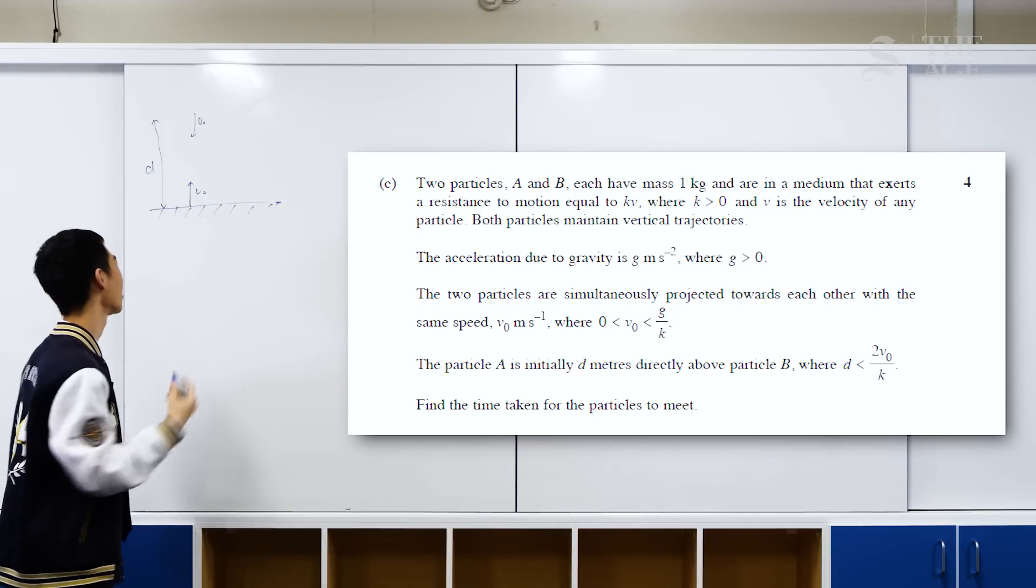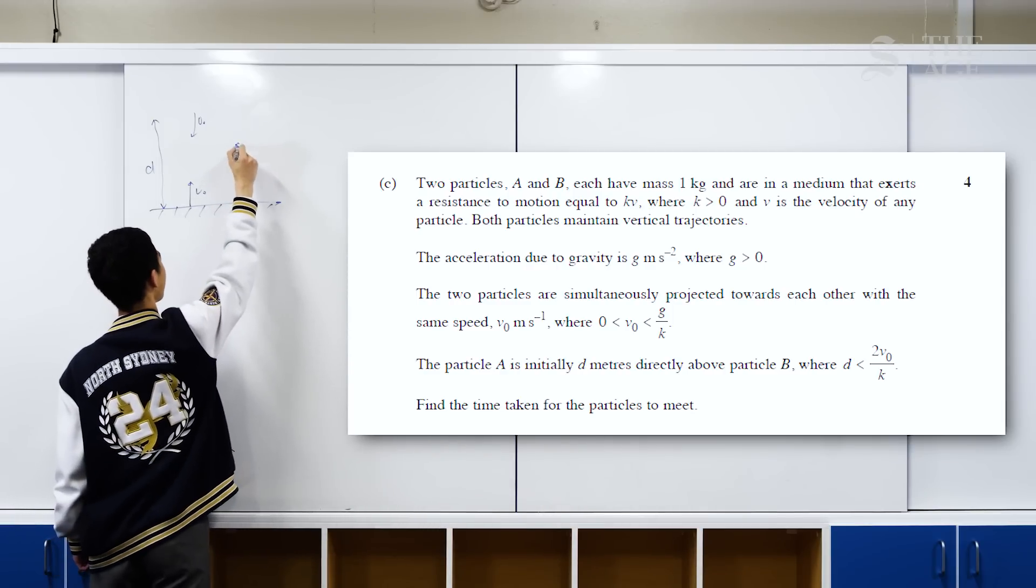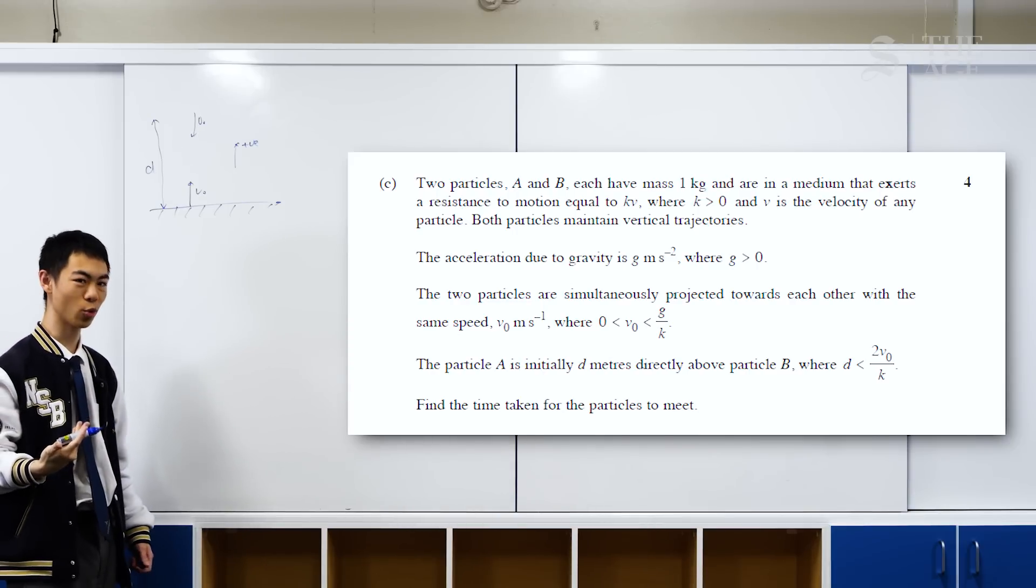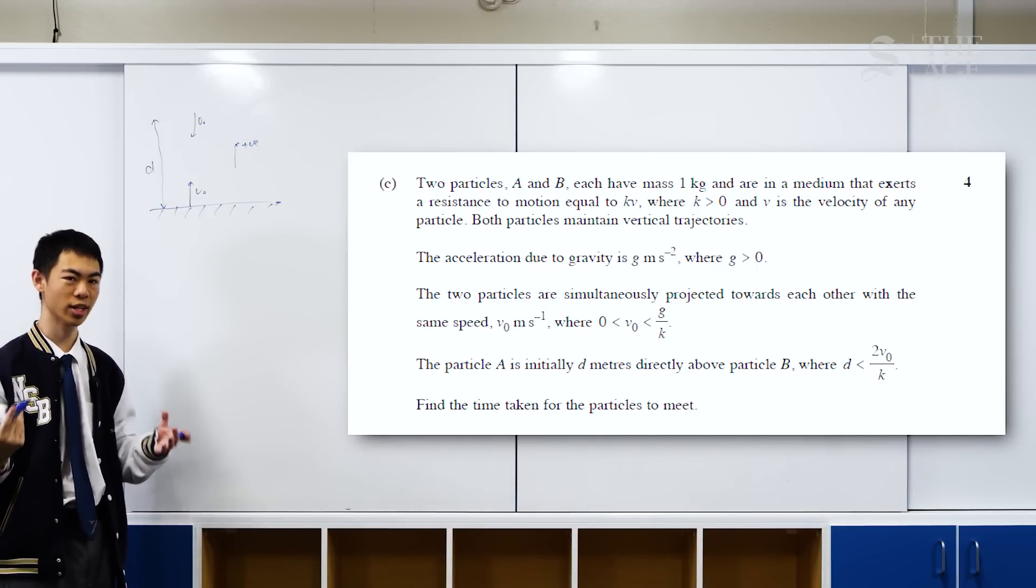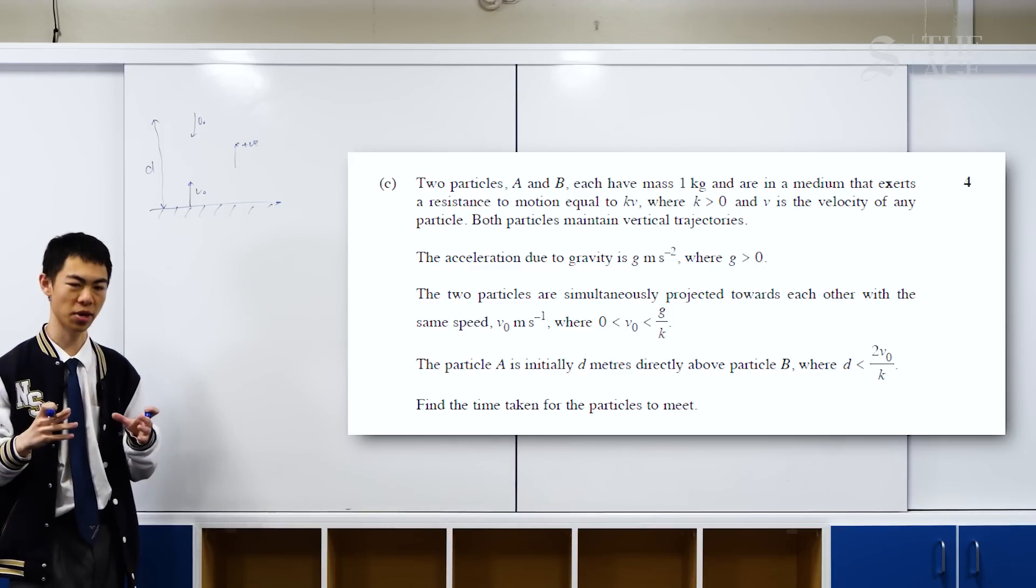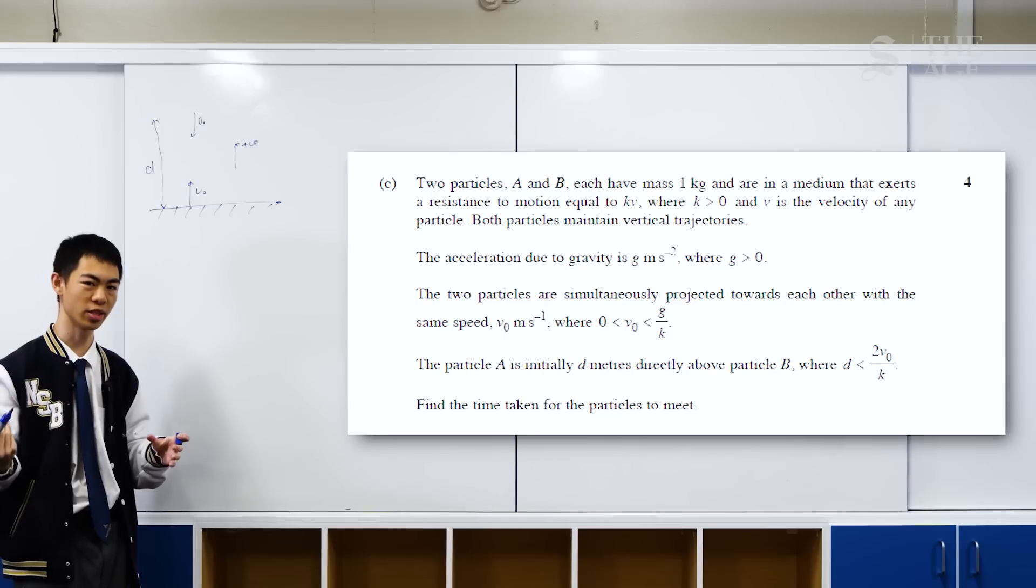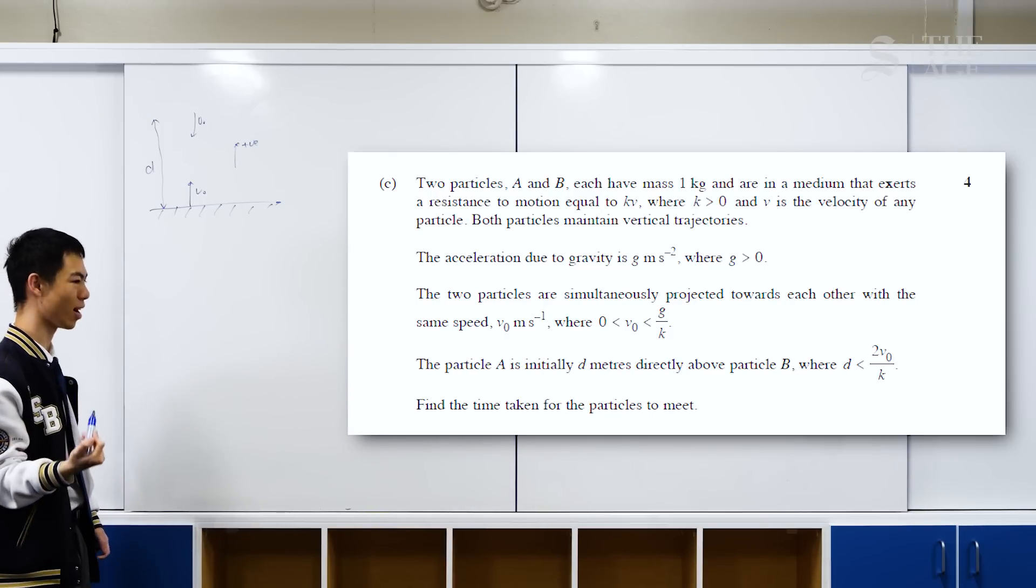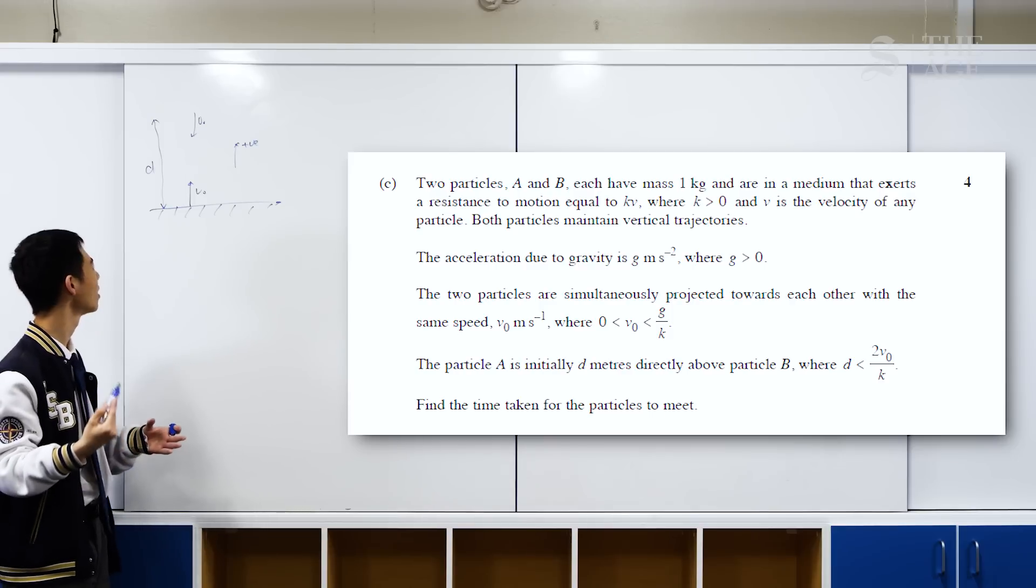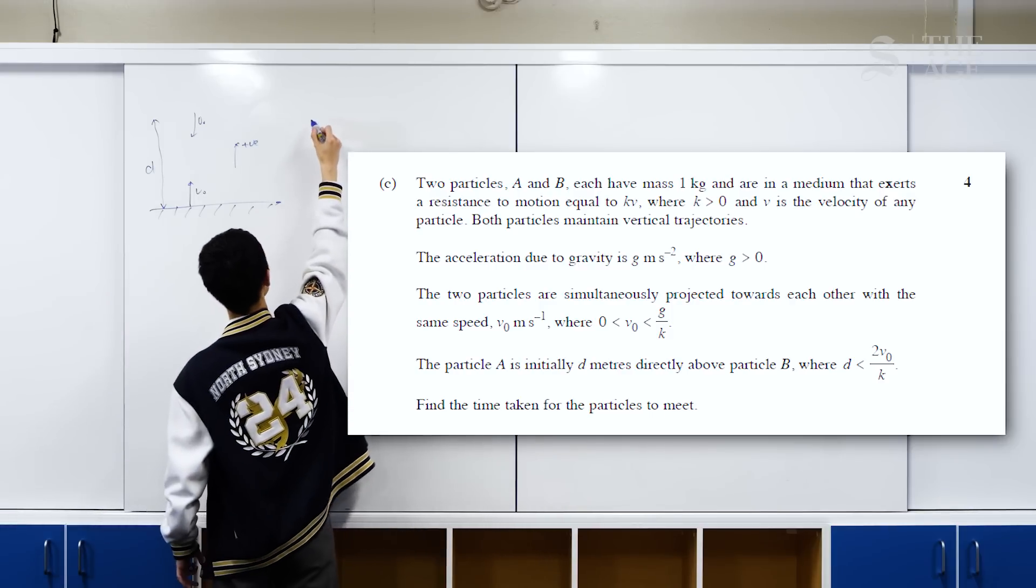First of all, I want to define up to be the positive direction. Just looking at the question, we want to find when they collide. Collision means that their position is the same, so we want the x to time relationship. At the start, we only have a relationship in terms of acceleration and velocity, which the question gives to us.